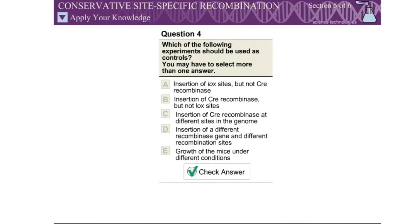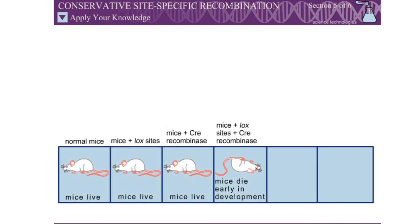Question 4: Which of the following experiments should be used as controls? While the mice all die early in development as a result of the gene knockout, tests show that the mice do not develop cancer. Apparently, the target gene is important for early development.